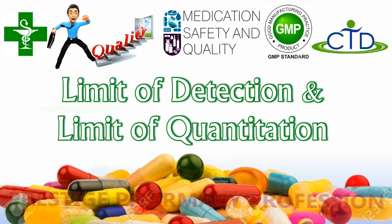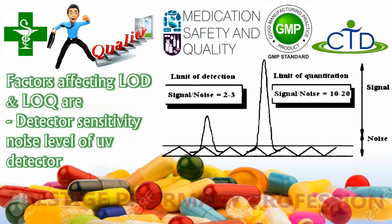Limit of detection and limit of quantitation are parameters used to check the UV absorption response of the analyte at a minimum level from which it gives a constant and authentic reading for selection of the analytical method. The peak observed in a chromatogram represents the amount of light passed through the analyte after separation from other ingredients at a specific wavelength, which is captured by the UV detector and converted into a peak by the data system.